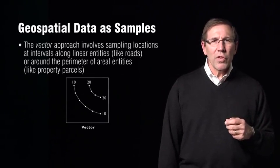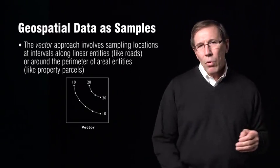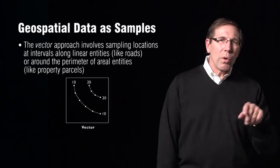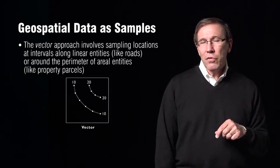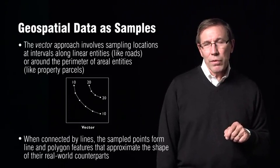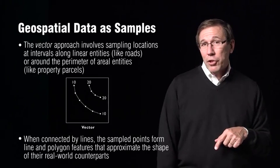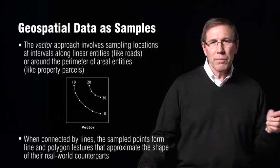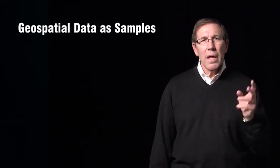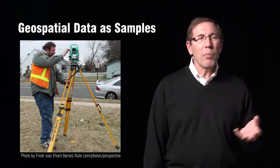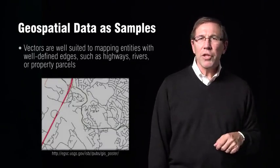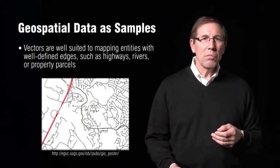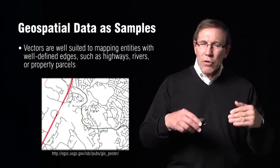The vector approach or strategy involves sampling along lines. It may be along the length of a road, or it could also be around the perimeter of a building. We collect information at points or locations, and we connect these points together with a line, which will give us a linear feature — a road. If we close the line, it will give us a polygon, which could represent a building. The vector data model is how surveyors survey a property boundary. The vector strategy is well suited for mapping entities that have clearly defined edges — highways, parcel boundaries, things where we know where the edge is.